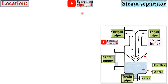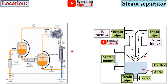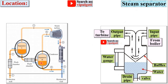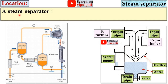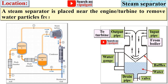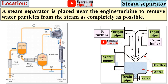Now the location of the steam separator — here you can see both are steam separators. A steam separator is placed near the engine; here you can see this one is the steam turbine, and near to the steam engine the separators are placed, to remove water particles from the steam as completely as possible before supplying to the steam turbine.